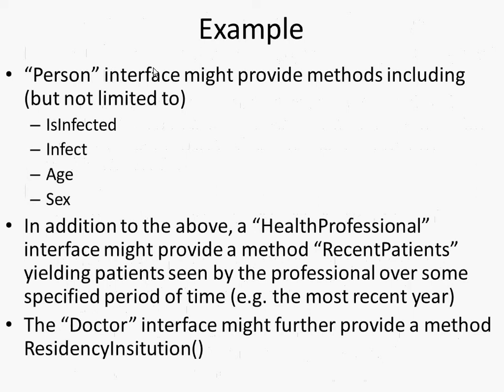But you might want to take advantage of it too. A person interface might provide methods beyond what an agent interface would. There are certain things like is-connected-to or dot-connect-to that are defined for agent. Which we didn't have to define for person, but person gets all for free — you say it inherits. But person may have other things we can ask, like is-infected, or infect-this-person, or get-age, or get-sex. In addition, a health professional interface might provide recent-patients, or a doctor interface might provide a routine called residency.